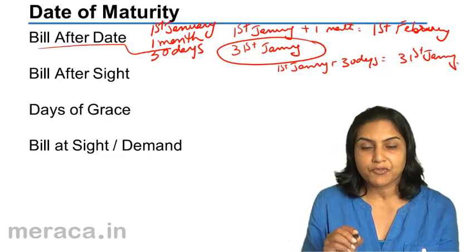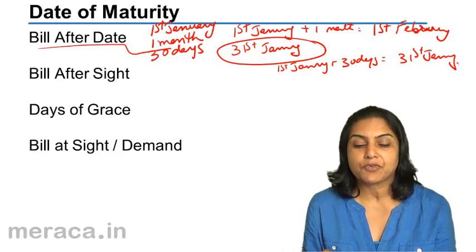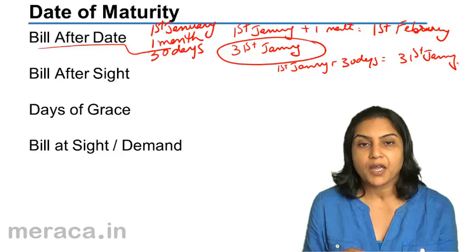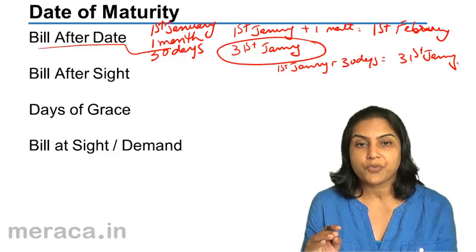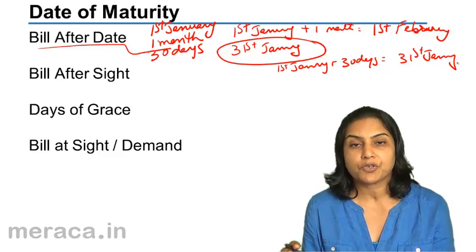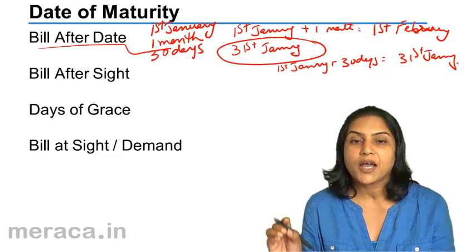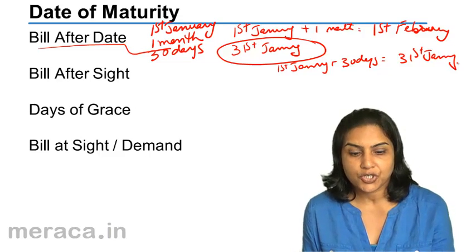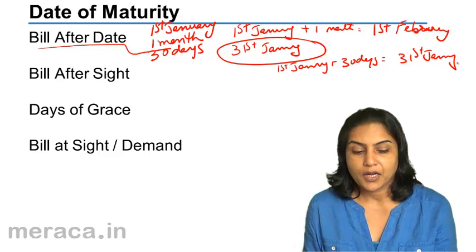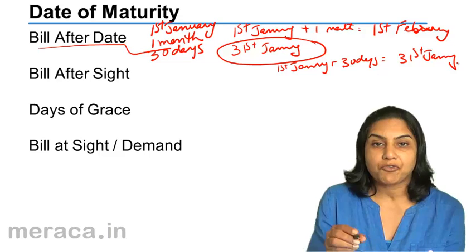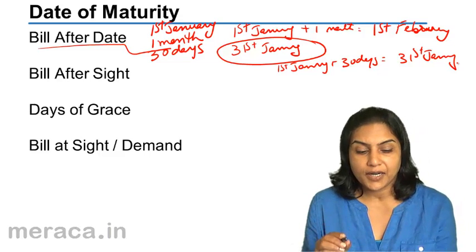There is a small difference when the period is expressed in months versus days. When it is in days, we count the exact number of days. But if it is in months — say 2 months from 1st January — it would be 1st January to 1st February to 1st March, so the date would be 1st March.